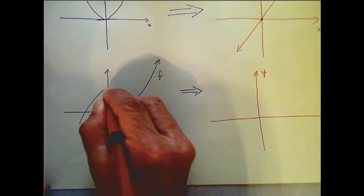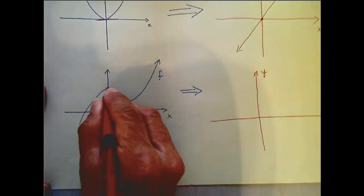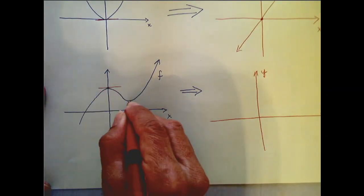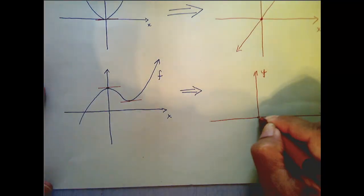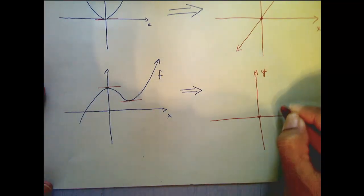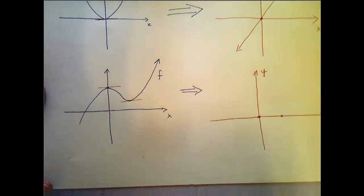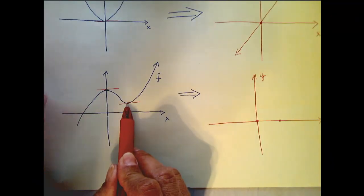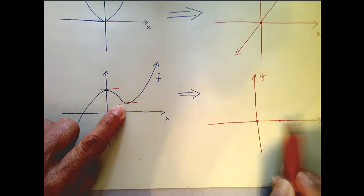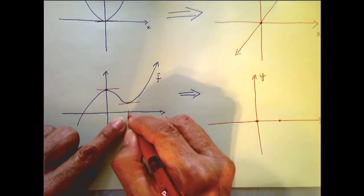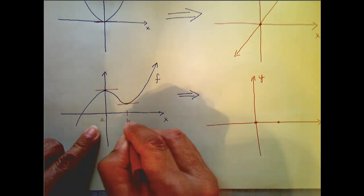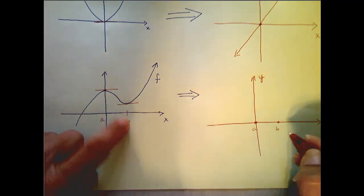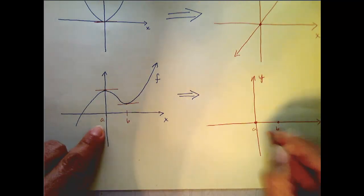Now let's look at this next one. You can see that the derivative is 0 — I have horizontal tangent lines here and here. So I'm going to be 0 here and here. If this is a and this is b, that corresponds to the derivative value at those particular x values, so my derivative is 0 at a and at b.